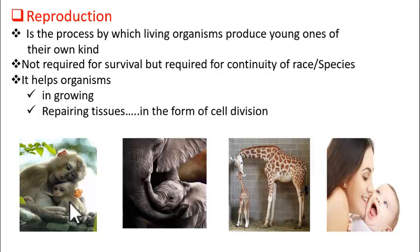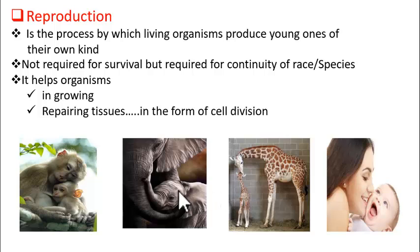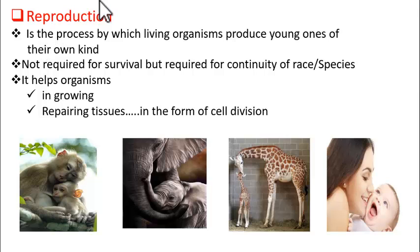See here, this monkey makes another monkey. An elephant makes another elephant. A giraffe makes a giraffe. Likewise, all living organisms produce young ones of their own kind. So this process of making young ones of their own kind by living organisms is what is called as reproduction. It is the process by which living organisms produce young ones of their own kind.